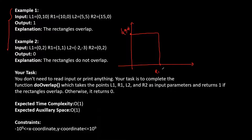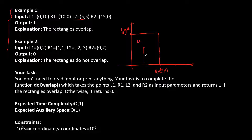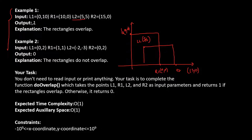Other than this, we are given L2. L2 is (5, 5), so let's suppose (5, 5) is somewhere here — this will be our L2. And R2 is (15, 0), so (15, 0) is somewhere here. This will be our second rectangle with L2 having (5, 5) and R2 having (15, 0). You can see that these rectangles are overlapping.